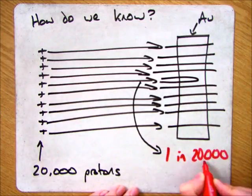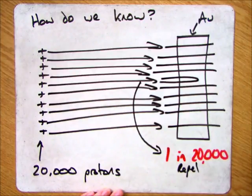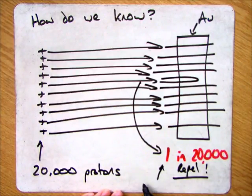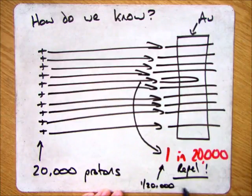The results of this investigation helped prove two different things. Firstly, that the nucleus of an atom has a very, very small diameter compared to that of the rest of the atom. And secondly, that most of the mass of the atom was concentrated in the nucleus.